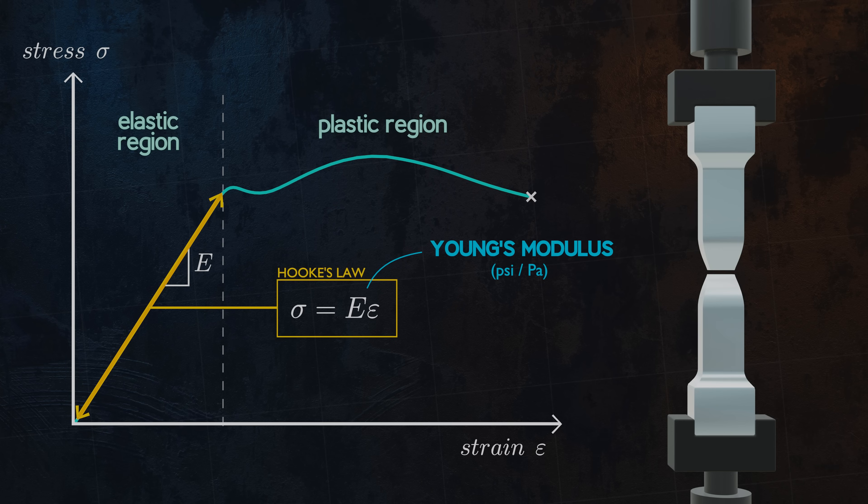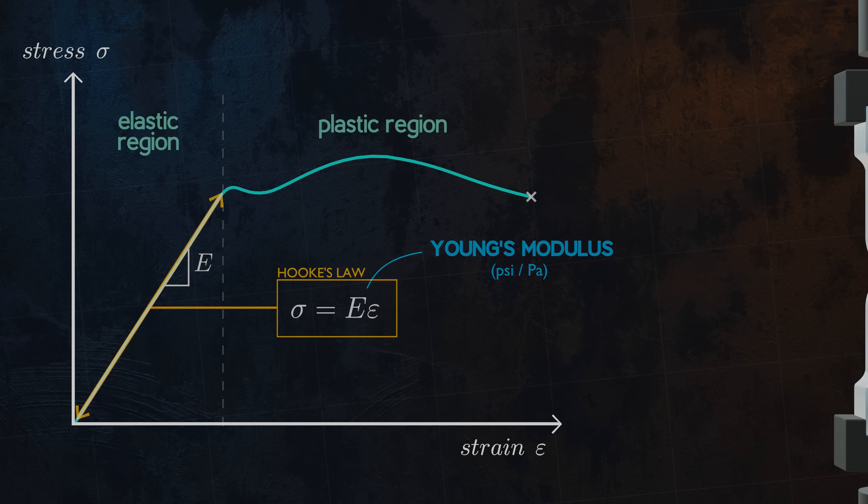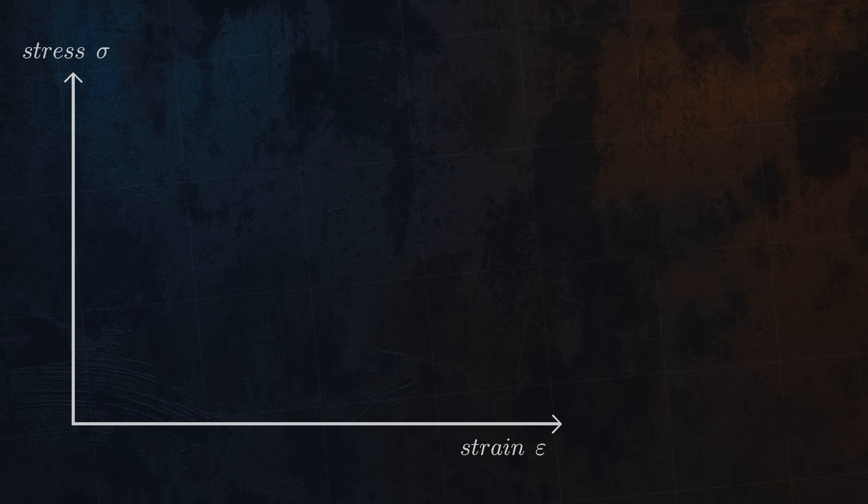Young's modulus is essentially a measure of how stiff a material is. The higher the Young's modulus, the stiffer a material and so the smaller the elastic deformations will be for a given applied load.